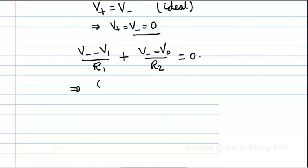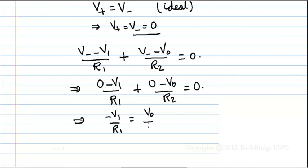substituting this, we get 0 minus V1 by R1 plus 0 minus V naught by R2 equal to 0. This implies that minus V1 by R1 equal to V naught by R2.